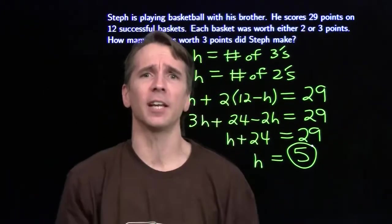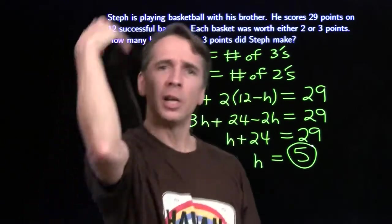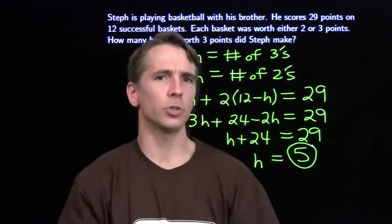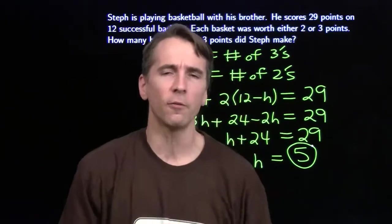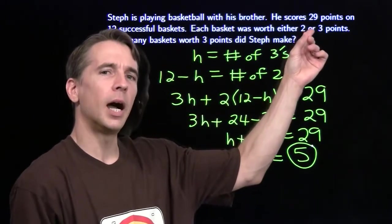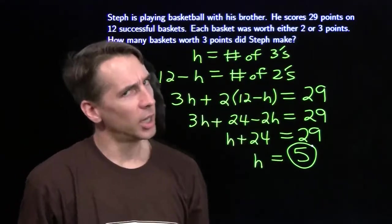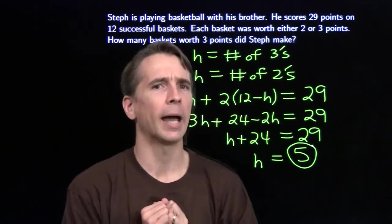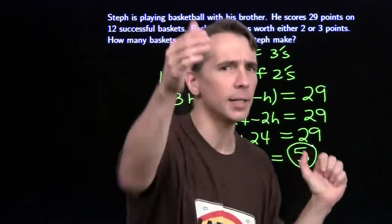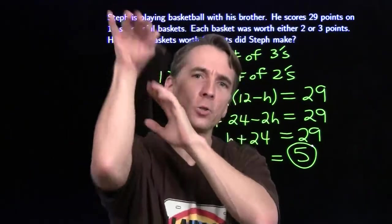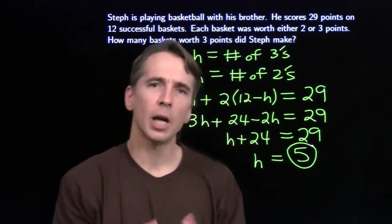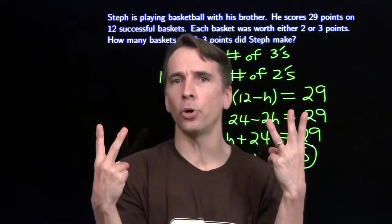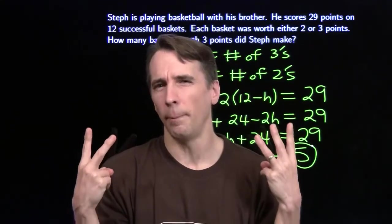Let's imagine that every time Steph gets the rock, he just blows by his brother, lays the ball in, gets a two pointer. Does this every single time, so he gets 12 two pointers, that's 24 points. We know he got 29 points. So he couldn't possibly have just gotten a layup every time. He must have held back. Every once in a while, instead of taking the ball to the hole, he stepped back, dropped in a three. So every time he gives up a layup and takes a three, instead he goes from a two pointer up to a three pointer. He gains one point.